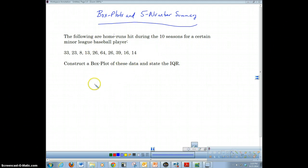Following are home runs hit during the 10 seasons for a certain minor league baseball player. We have 10 things. Construct the box plot of these data and state the IQR. So the first thing we're going to do is put these guys in order from least to greatest: 8, 13, 14, 16, 23, 26, 28, 33, 39, and 64. It looks like he started well, something happened, started doing really well again, and then started his decline.